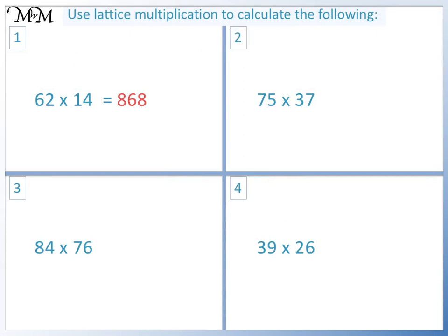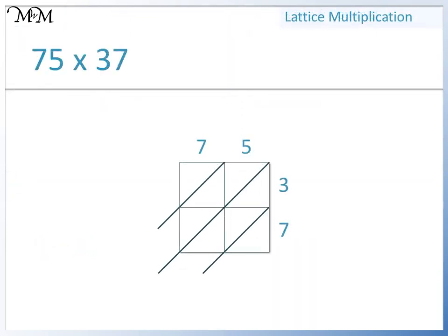Question 2: 75 times 37. 7 times 3 equals 21. 5 times 3 equals 15. 7 times 7 equals 49. 5 times 7 equals 35. Here we have 5. 9 plus 3 plus 5 equals 17. We write 7 here and carry the 1. 4 plus 1 plus 1 plus the 1 that we carried equals 7. And in this diagonal we have 2. The digits are 2, 7, 7, 5. So 75 times 37 equals 2775.